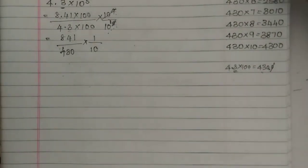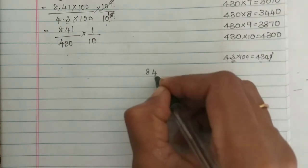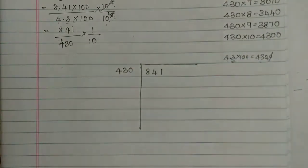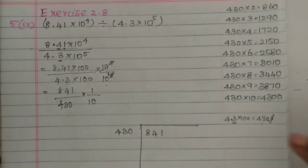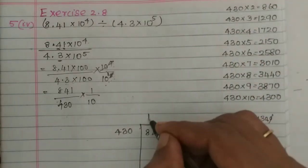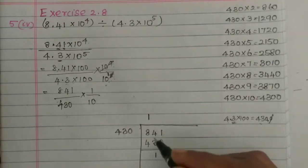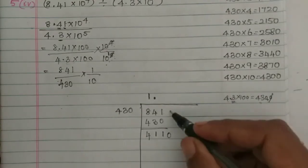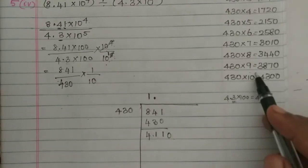So we take the 430 times table and divide. 430 goes into 841 one time — 1 times 430 is 430. The remainder: 1 minus 0 is 1, 4 minus 3 is 1, 8 minus 4 is 4 — so remainder is 411. Bring down 0 to get 4110.